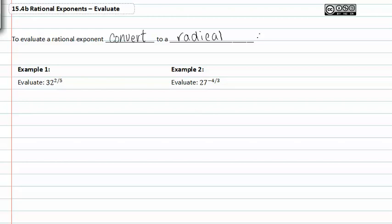Let's do a few examples. If we're asked to evaluate 32 to the 2/5, we know that the 2 represents the exponent and the 5 represents the index.